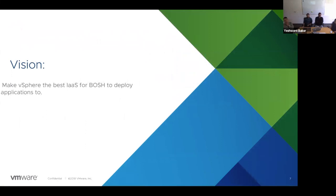Our vision is to make vSphere the best IaaS for BOSH to deploy applications to — we want to bring all the goodness of vSphere to the BOSH and Cloud Foundry world. There are two parts to this. First, vSphere has been around for a long time and has lots of features that admins and developers love, like datastore clusters or storage DRS, which have been around since vSphere 5.0 or 5.1. Our focus is to gain feature parity with all these capabilities.